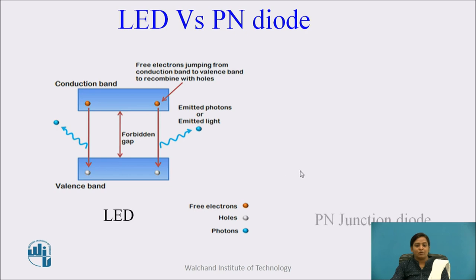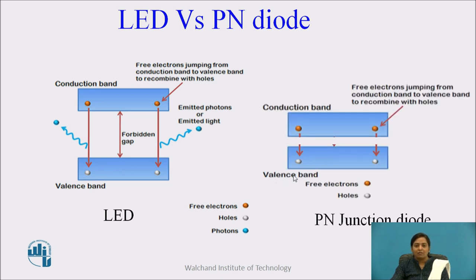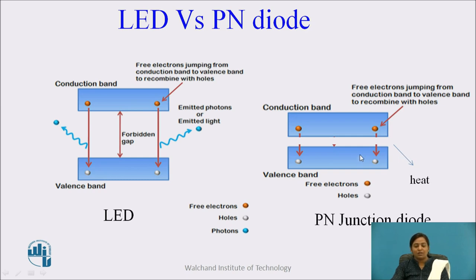In the case of a PN junction diode, whenever material like silicon or germanium is used, the energy gap between the valence band and conduction band is very small. So electrons jump a very small distance whenever electron-hole recombination takes place, and the energy released is in the form of heat. The photons emitted have very low frequency, which is invisible to the human eye. So in silicon or germanium, whenever electron-hole recombination takes place, no light emits. This is the basic difference between a PN junction diode and LED.